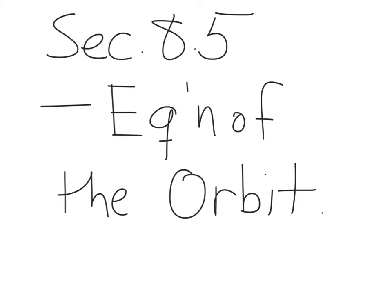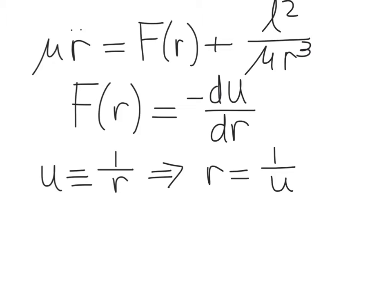In section 8.5, we look at how to convert our dynamical equation for central force motion into an equation for the orbit of the two interacting particles. Recall that our dynamical equation, R double dot times mu, is equal to the central force of interaction between the two particles, plus a term which has to do with conservation of angular momentum. The force function is the negative r derivative of our potential energy function, U.